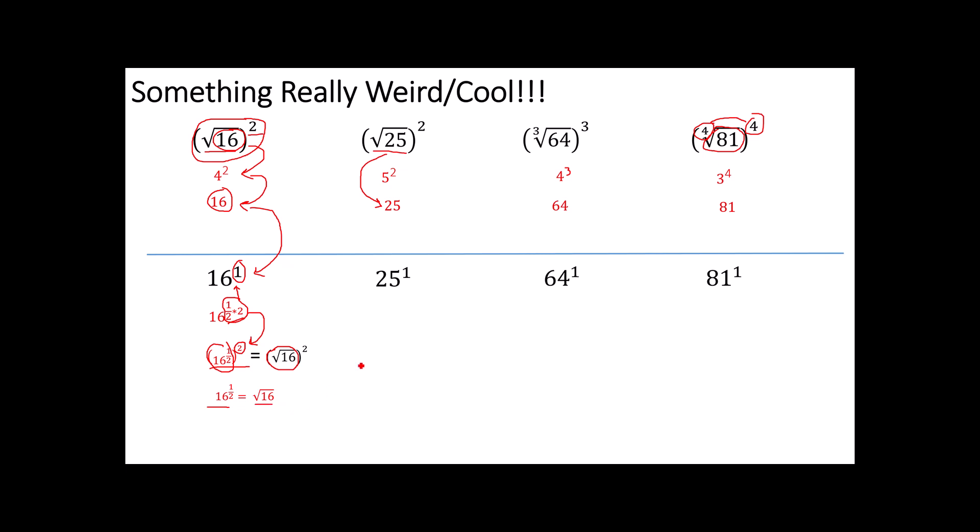16 to the 1 half squared is equal to the square root of 16 squared. And since this squared is equal to this squared, that means those two items are the same. Weird, right? Let me do it again with a 25. Notice that I've got a square root up here and I've got a square. I'm going to take this 1 and I'm going to split it into a half times 2. 1 half times 2 does equal 1 so I'm fine there. I do that because now I can rewrite it this way because of the power of a power property. Well, if all six of these are the same, that means that this is equal to this. Weird, right?